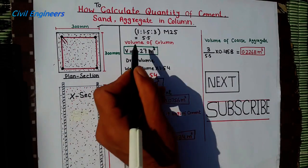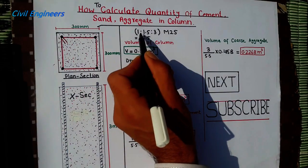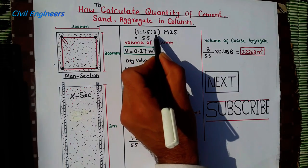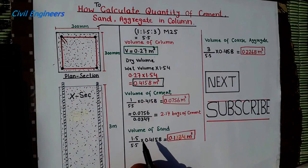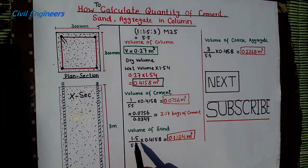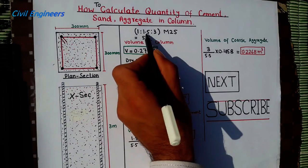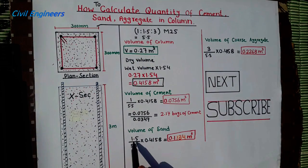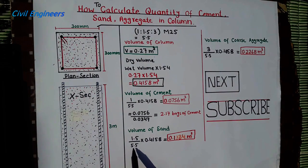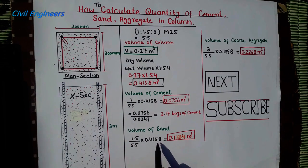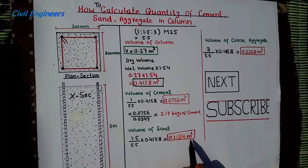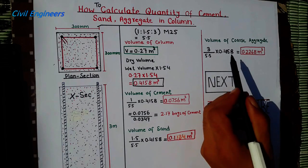Now I want to find out the volume of sand. The sand ratio is 1.5, and 5.5 is the sum of ratio. Multiply by the dry volume, which is 0.4158. This gives you 0.1134 meter cube for the volume of sand.